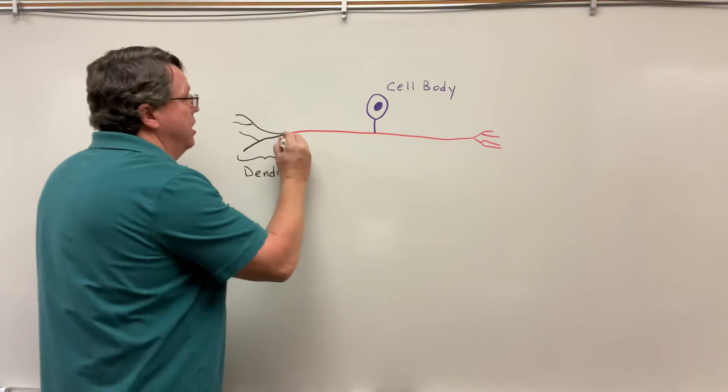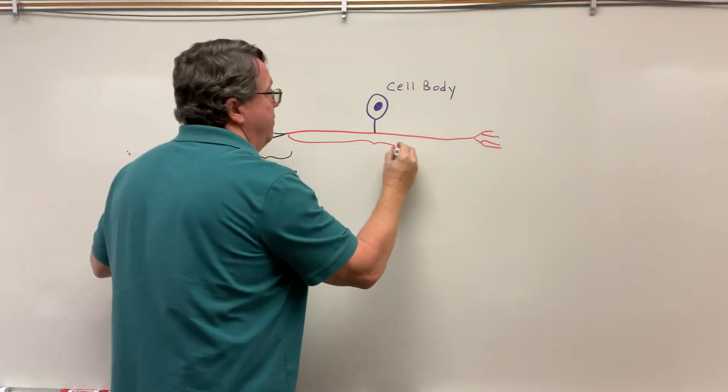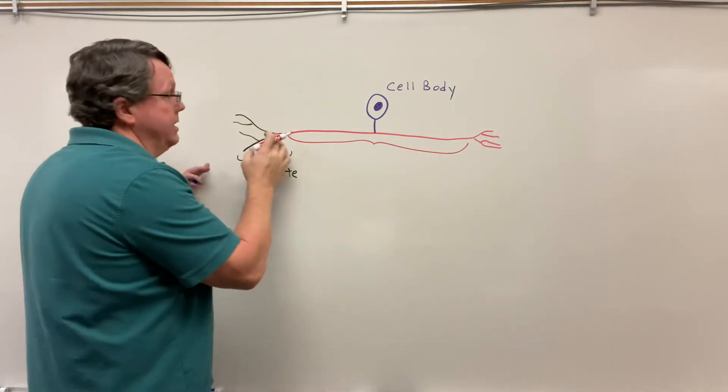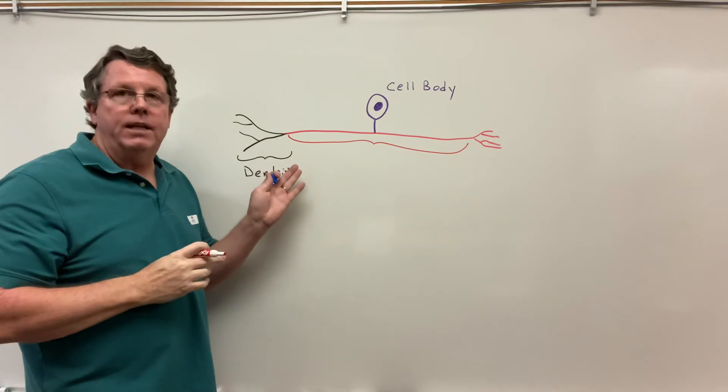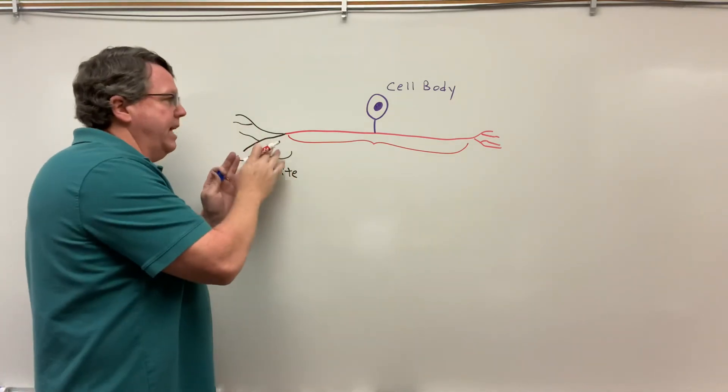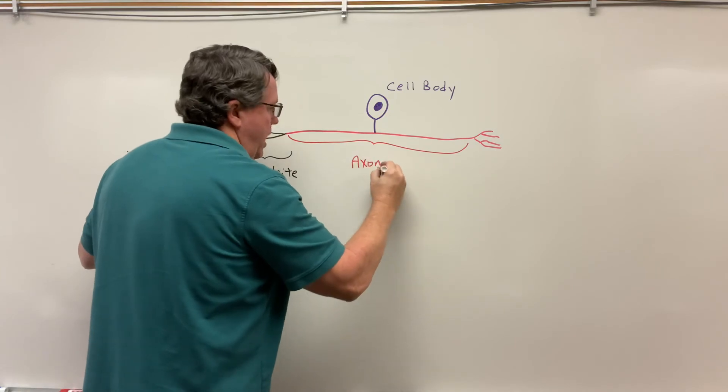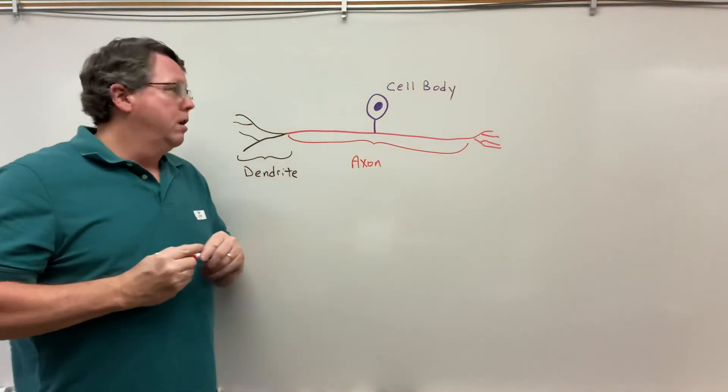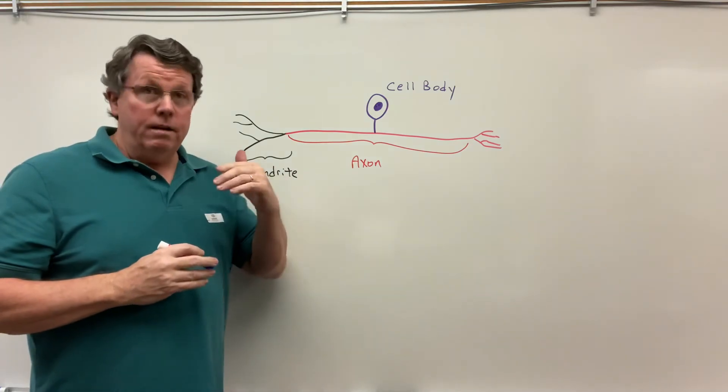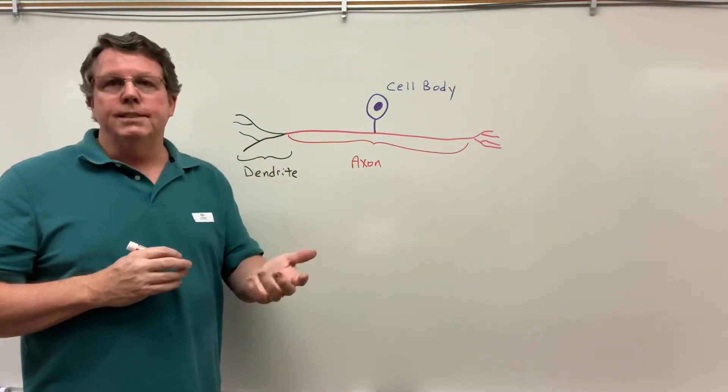The rest of this is the axon. So the axon basically carries the information away. In this case, it's carrying it away from the dendrite. But for the most part, the axon is going to be the rest of this. And remember, we said this is basically the most common neuron found in the peripheral nervous system that does sensory.